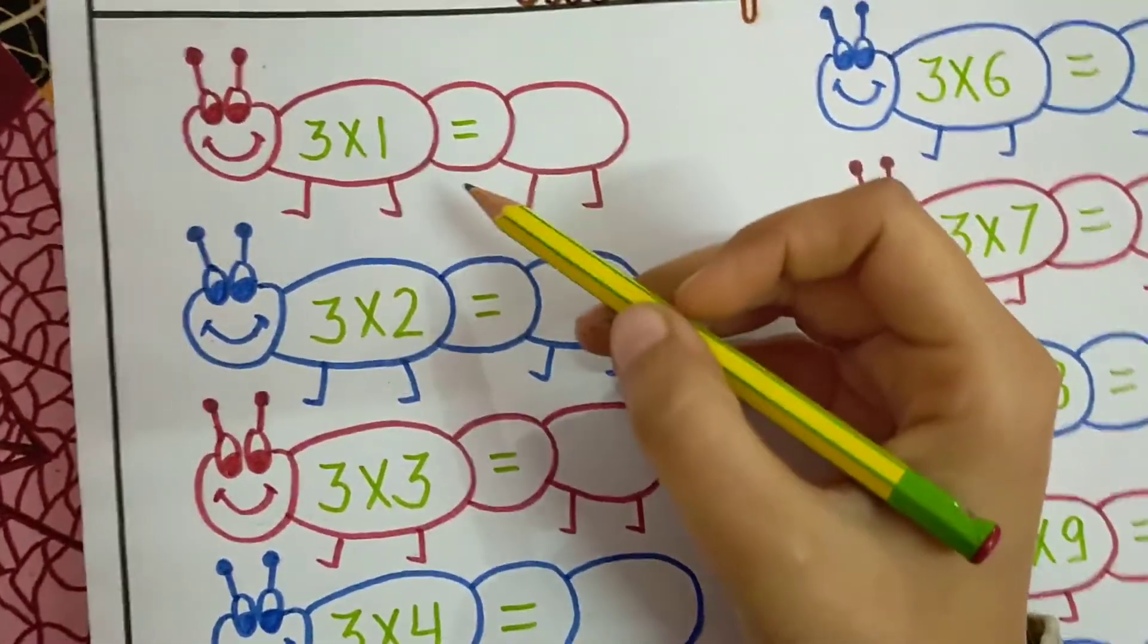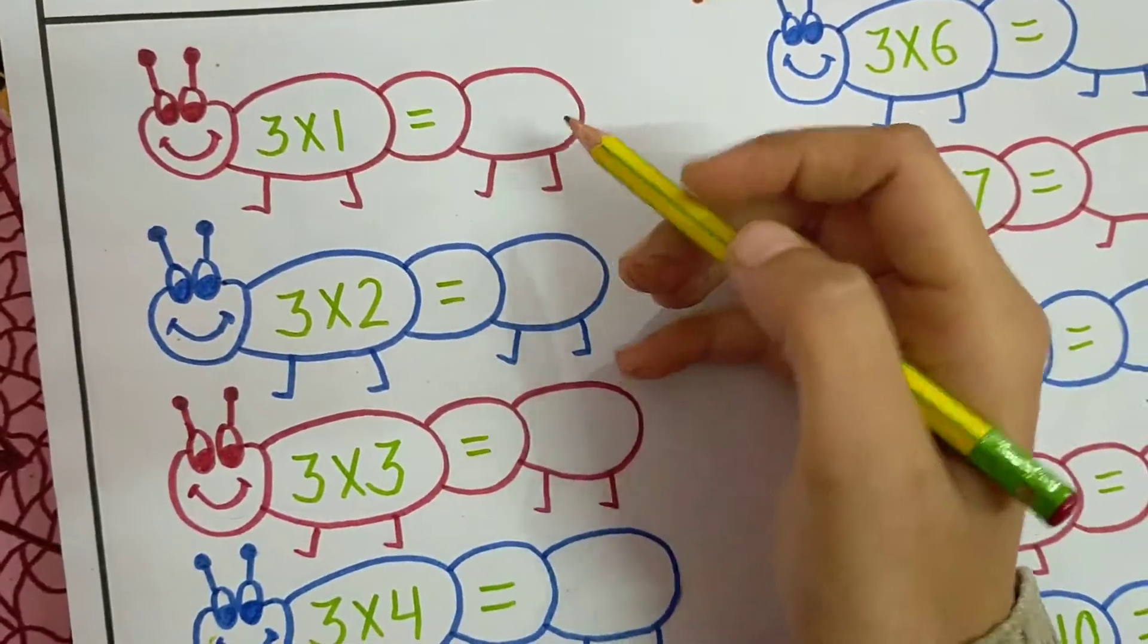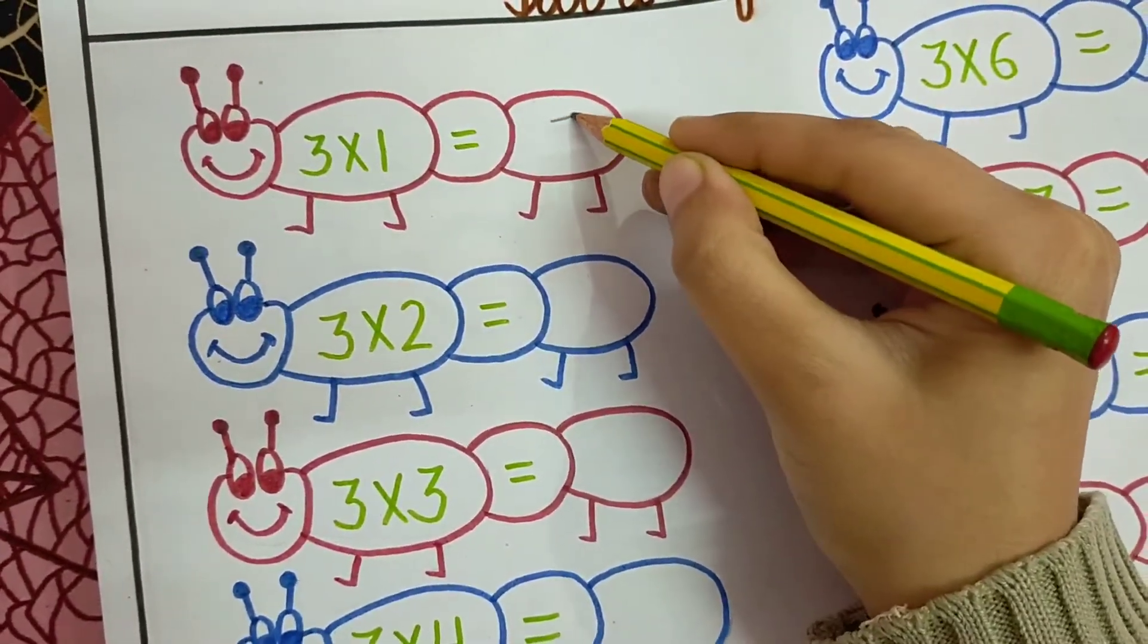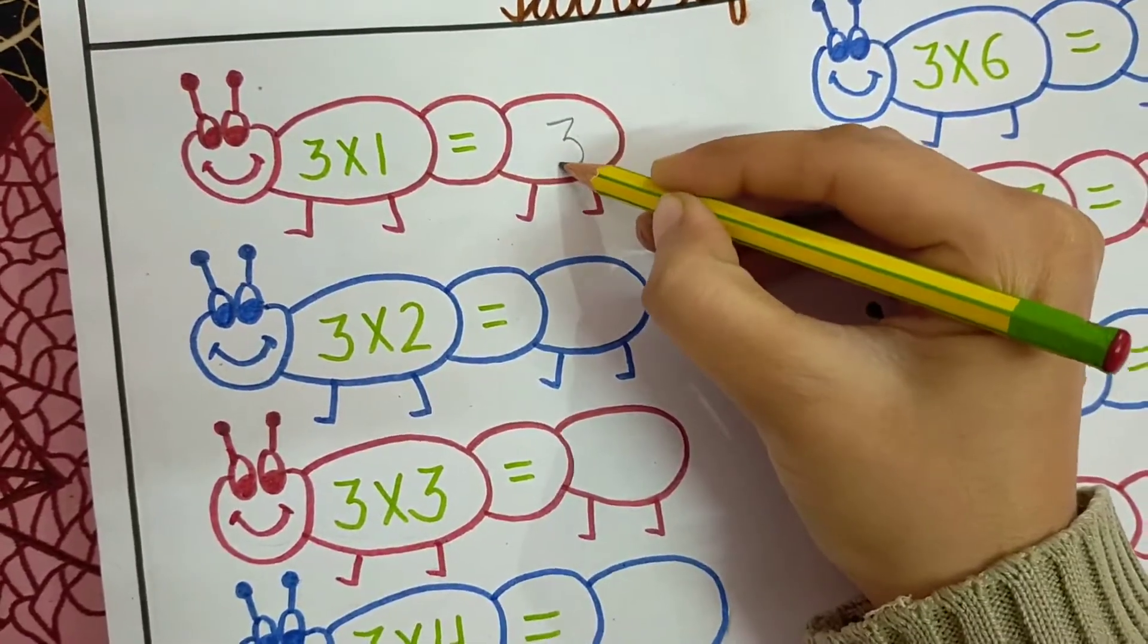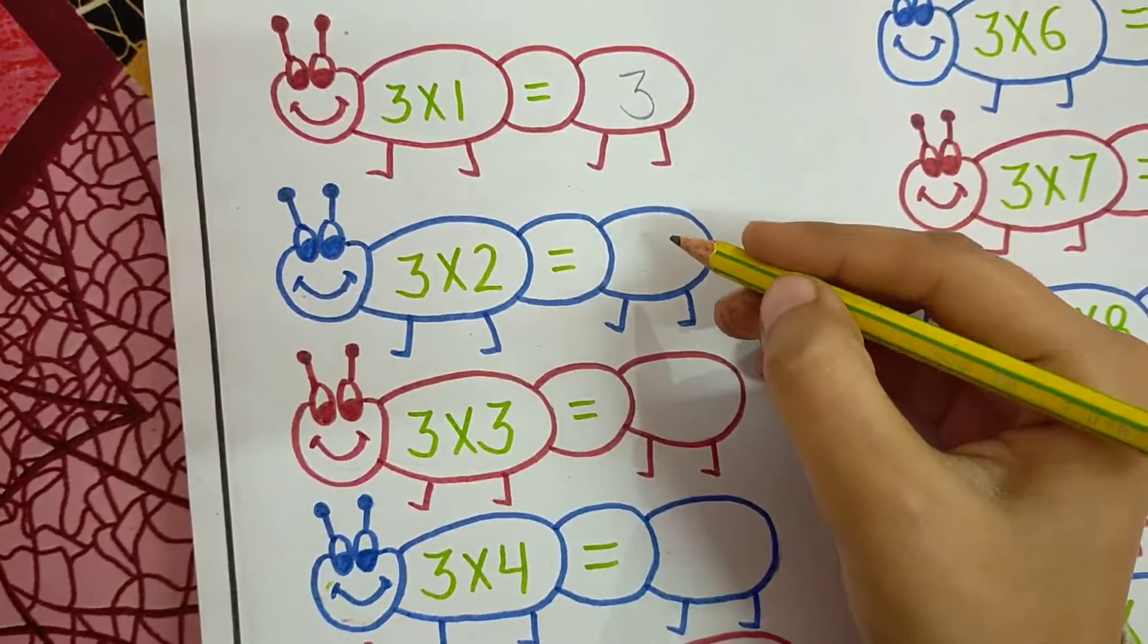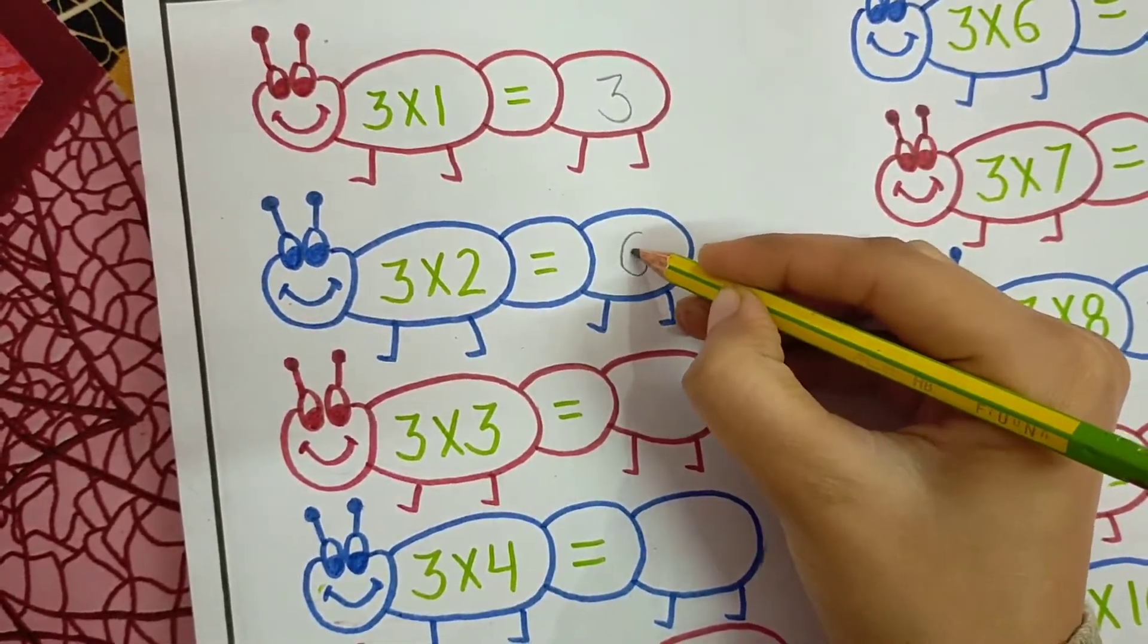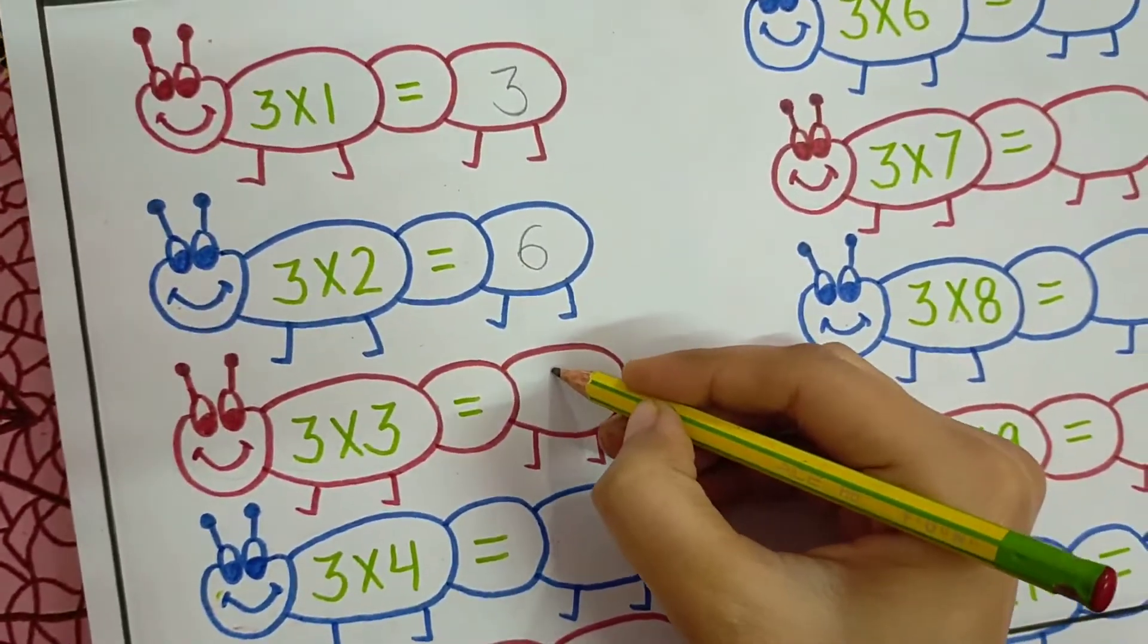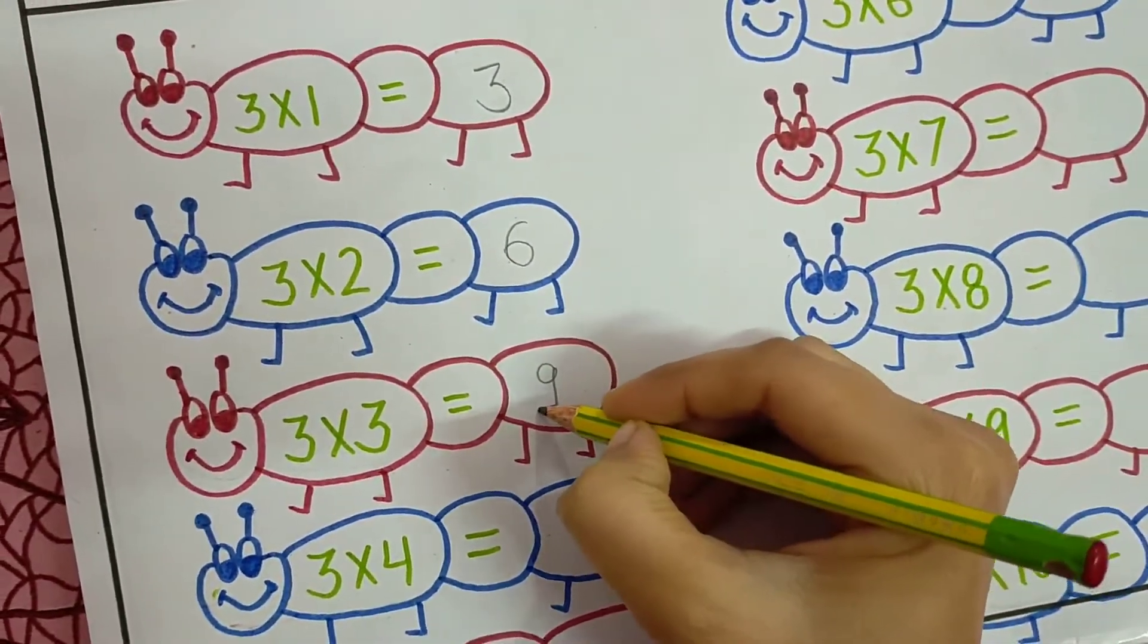So, here we start. 3 times 1. What do we want to write here? 3 times 1 equals 3. Next is 3 times 2 equals 6. 3 times 3 equals 9.